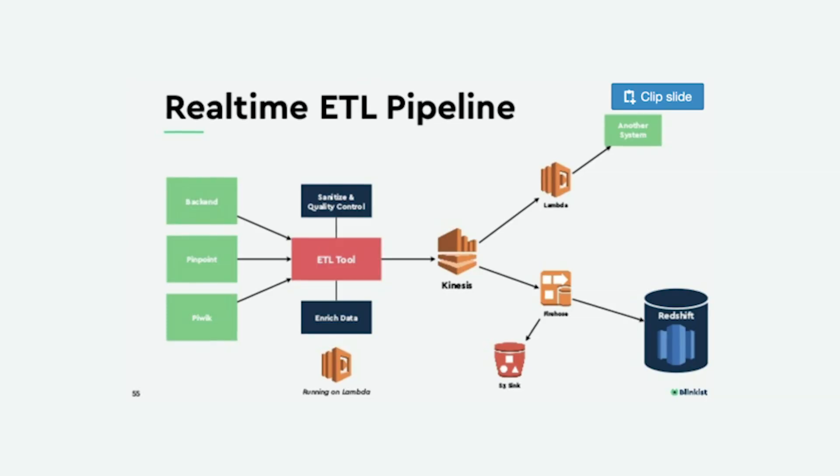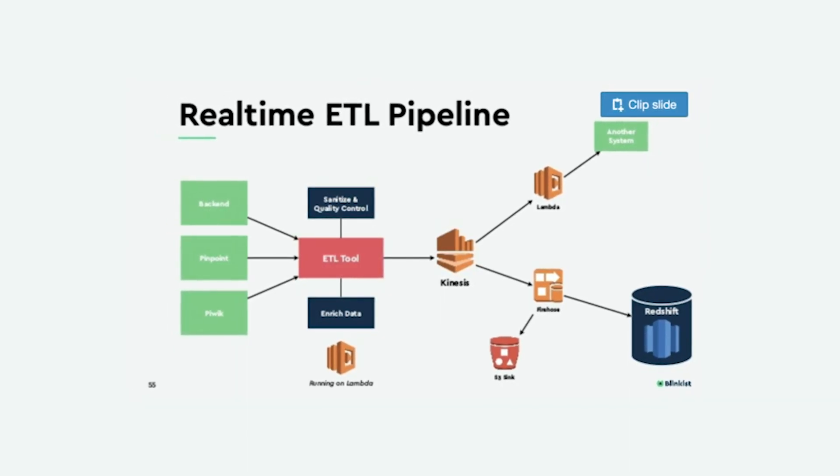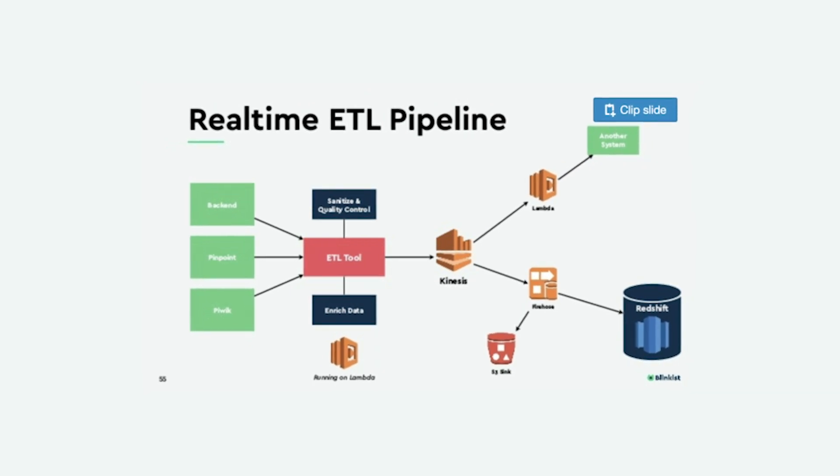My first job out of college was to work as a data engineer at a really small startup called AirPR. As a data engineer, I was really in charge of the data pipelines and data ingestion and flow throughout our entire product. But since we were such a small company of about 25 people, I ended up taking on a lot of different projects related to ML models and software engineering work. As a result, I gained a lot of experience in these three domains, and that experience has allowed me to become an even better ML engineer today.